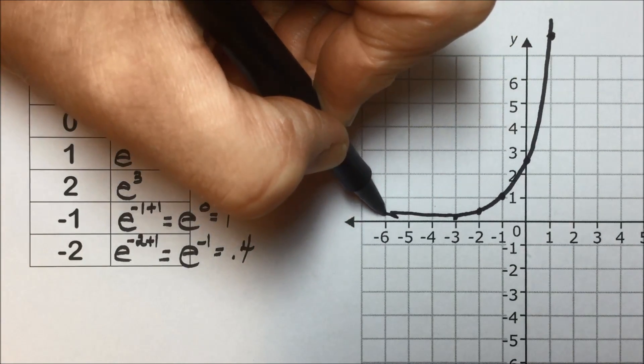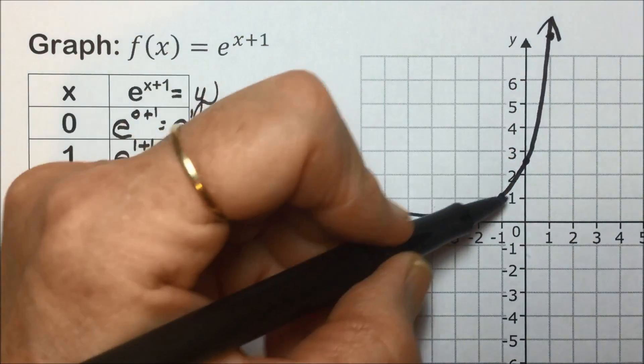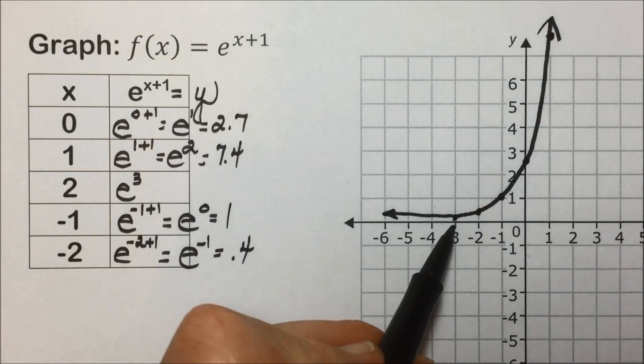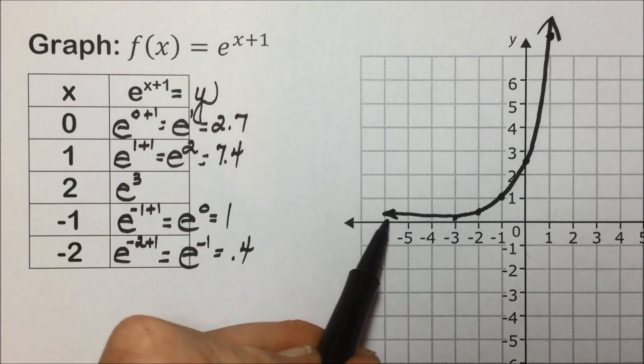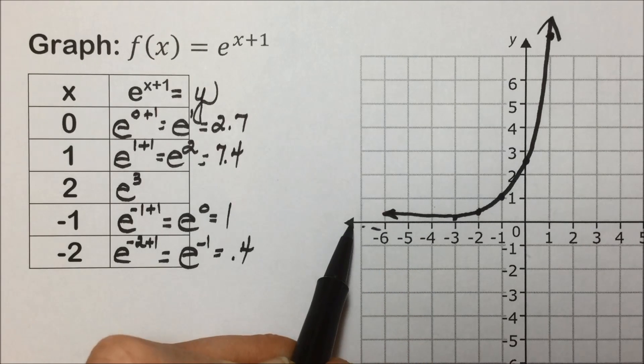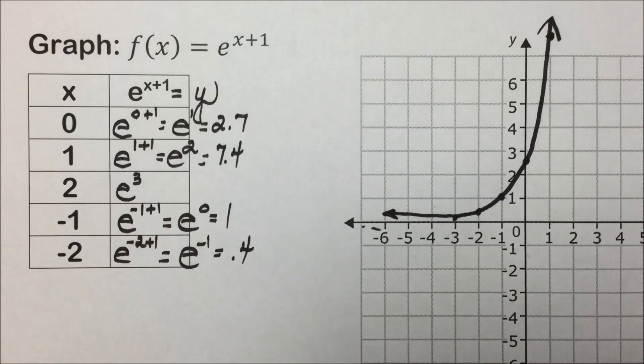we have the classic exponential function, increasing as our values go from left to right. It's approaching, the smaller our x values are, it's getting ever closer to the horizontal asymptote of the x-axis, or the line y equals 0.